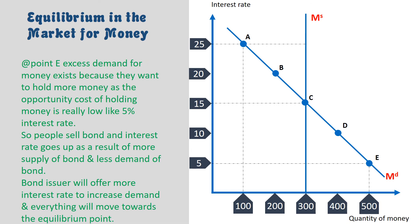At point E, excess demand for money exists because people want to hold more money as the opportunity cost of holding money is really low, like 5% interest rate. So people sell bonds, and interest rate goes up as a result of more supply of bonds and less demand for bonds. Bond issuers will offer a higher interest rate to increase demand, and everything moves toward the equilibrium point.